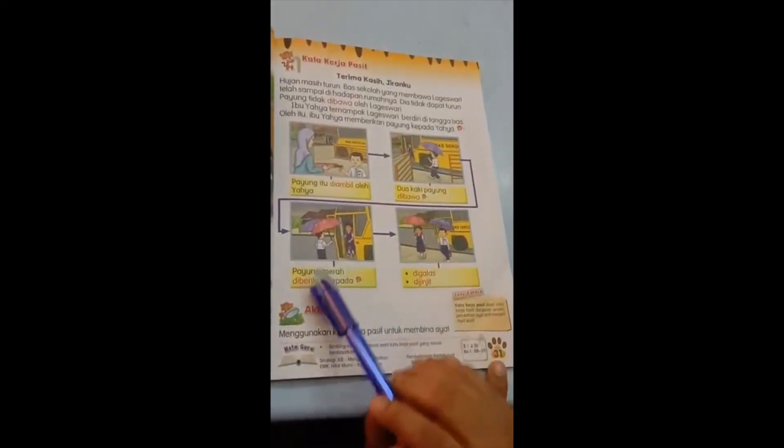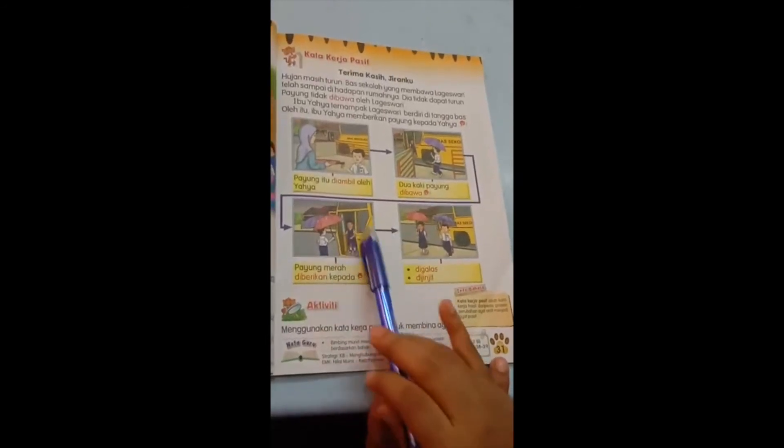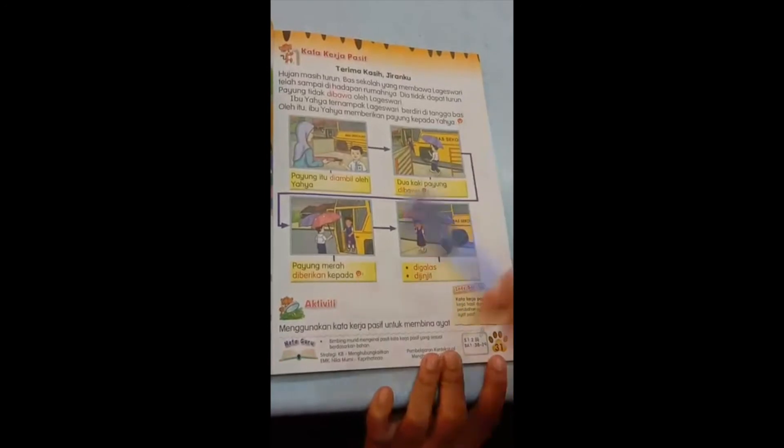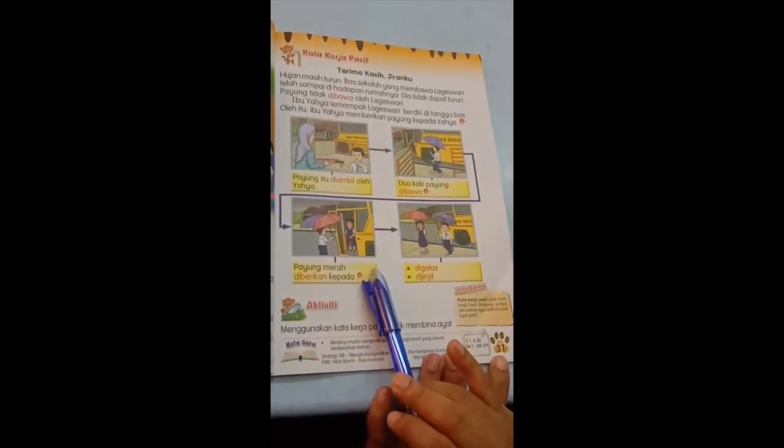Next. Payung merah diberikan kepada, what is this girl's name? You have to fill in the girl's name. It is there from the petikan. So you can fill in the girl's name.